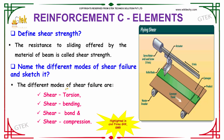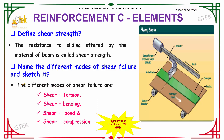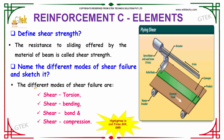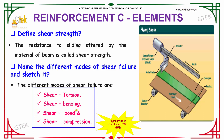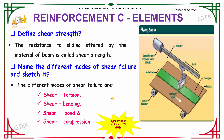Name the different modes of shear failure and sketch it. The different modes of shear failure are as follows: shear torsion, shear bending, shear bond, and shear compression. These are the modes of shear failure that can possibly occur.